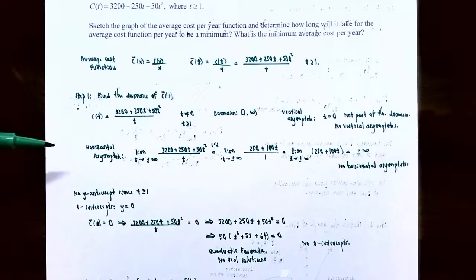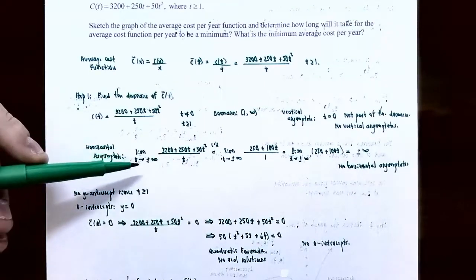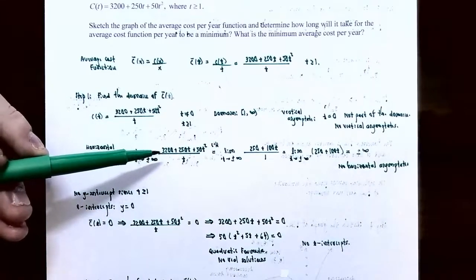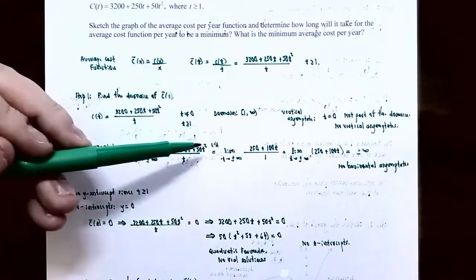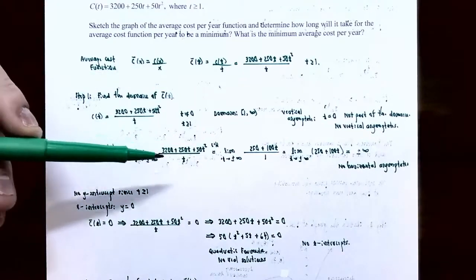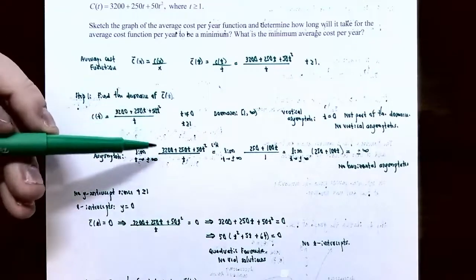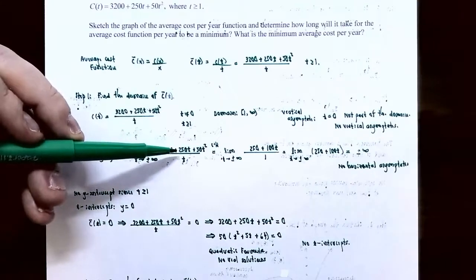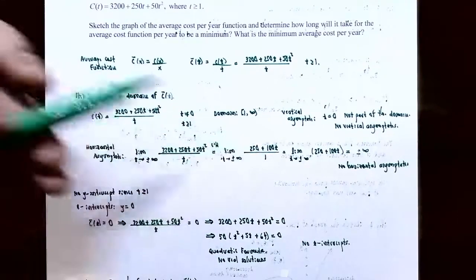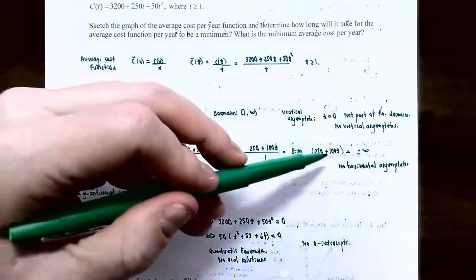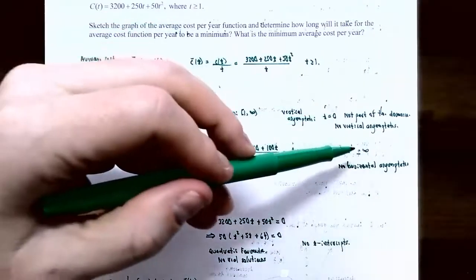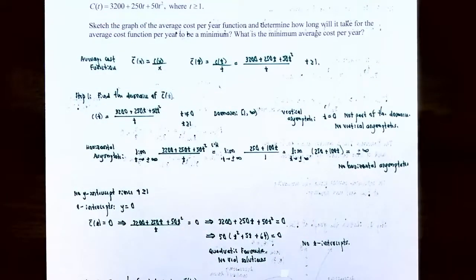Now let's find the horizontal asymptote. We look at the limit as t approaches plus or minus infinity of the average cost function: (3200 + 250t + 50t²) / t. Plugging in infinity gives the indeterminate form ∞/∞, so we use L'Hôpital's rule. The derivative of the numerator is 250 + 100t, and the derivative of the denominator is 1, giving 250 + 100t. As t approaches plus or minus infinity, this limit is also plus or minus infinity, so there are no horizontal asymptotes.